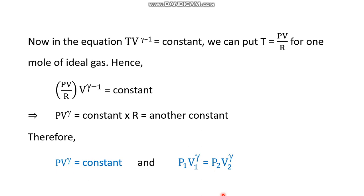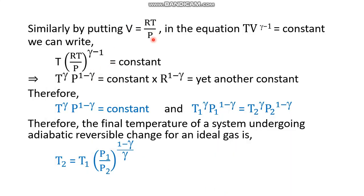The first relation was between T and V, the second between P and V. What remains is the P and T relation. Recalling TV^(γ−1) = constant and substituting V = RT/p (from pV = RT), we get T·(RT/p)^(γ−1) = constant. Simplifying this product yields T^γ · p^(1−γ) / R^(1−γ) = constant, and since R^(1−γ) is also a constant, we conclude that T^γ · p^(1−γ) = constant.